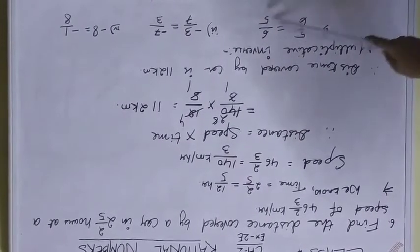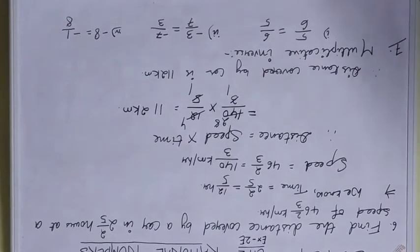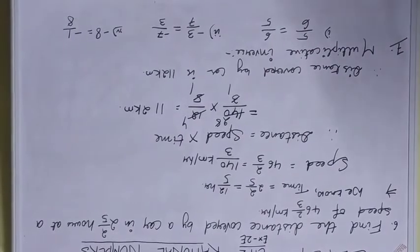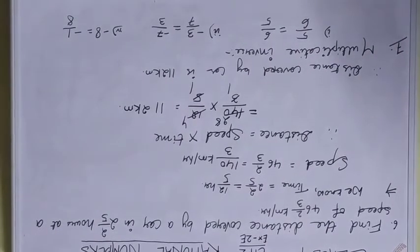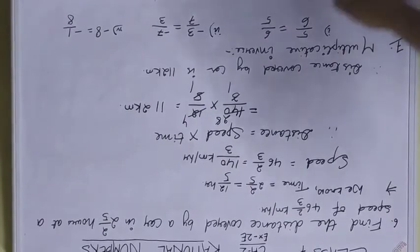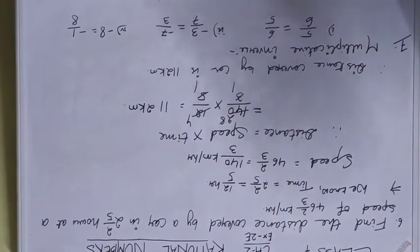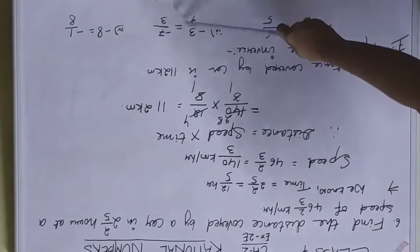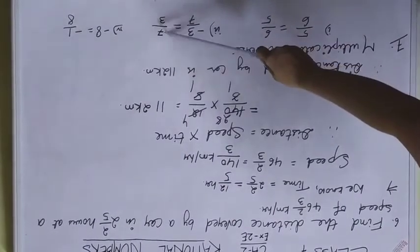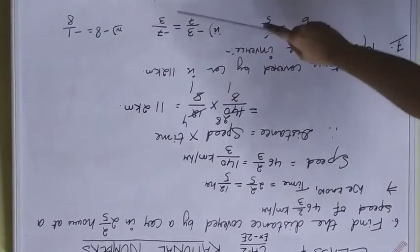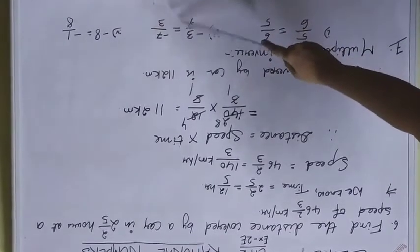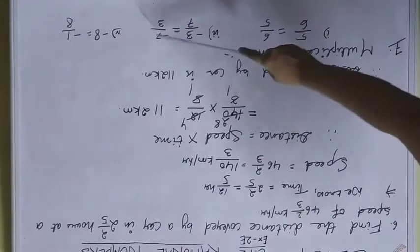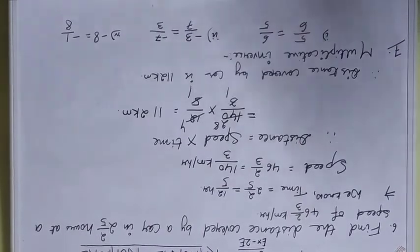Suppose we have a negative number in the numerator, -3/7. The multiplicative inverse of -3/7 will be, the negative sign will remain with the numerator. Only the numbers will interchange, so it becomes -7/3.